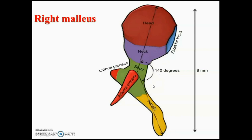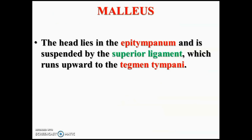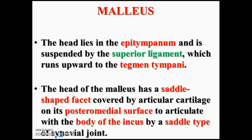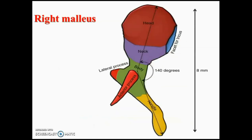The angle between neck and body is about 140 degrees. The head of the malleus lies in the epitympanum, suspended by a superior suspensory ligament attached to tegmen tympani. The head of the malleus forms a saddle variety of synovial joint with its facet for the body of the incus on the posterior medial surface, covered by articular cartilage.